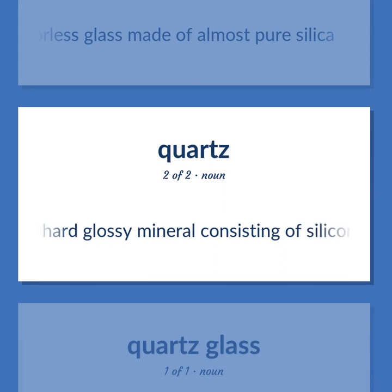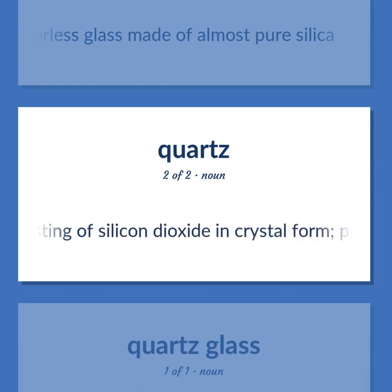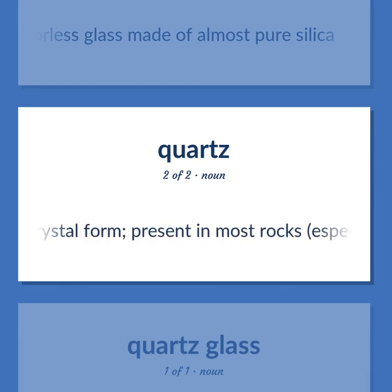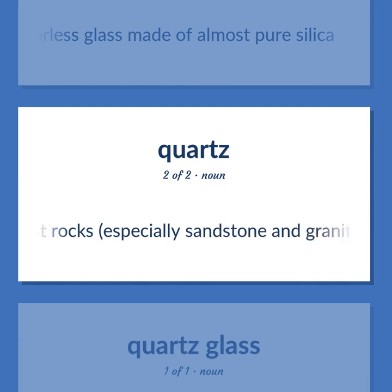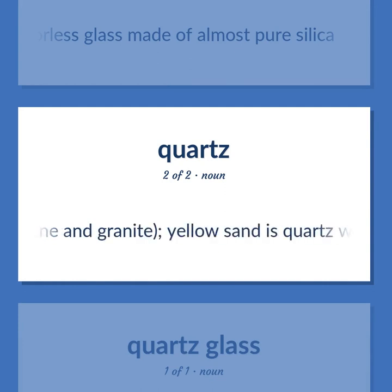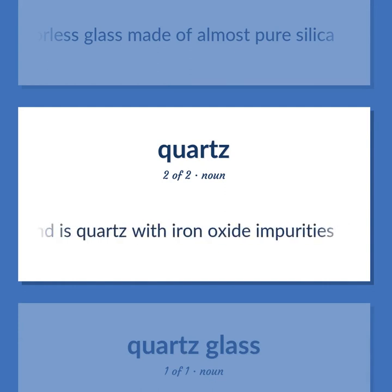A hard glossy mineral consisting of silicon dioxide in crystal form. Present in most rocks, especially sandstone and granite; yellow sand is quartz with iron oxide impurities.